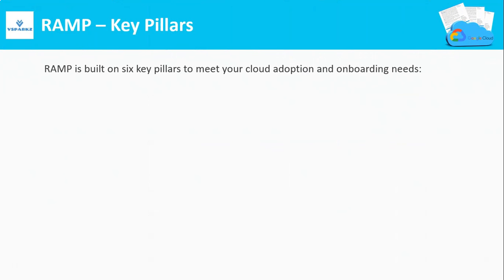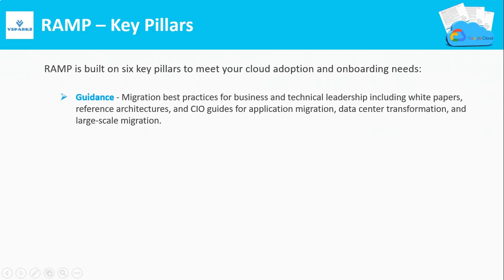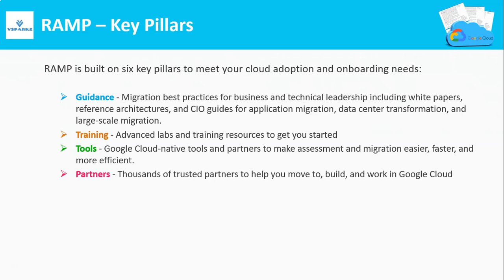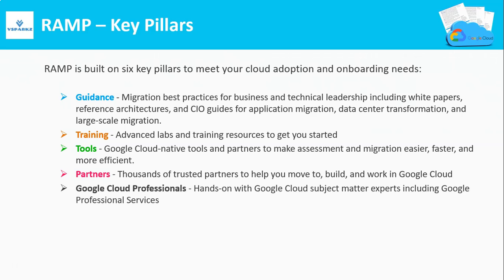RAMP is actually built on six key pillars to meet your cloud adoption and onboarding needs. They are: guidance from Google, professional training on Google Cloud, the tools that drive migration quicker, trusted Google partners who can actually help to move, build and work in Google Cloud, Google Cloud's professional services, and offers from Google Cloud.